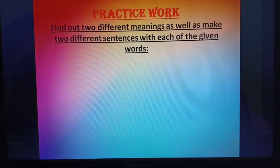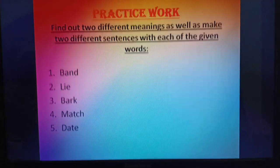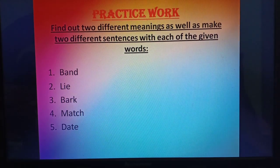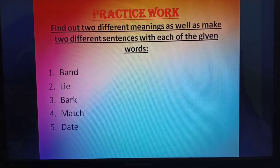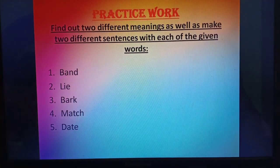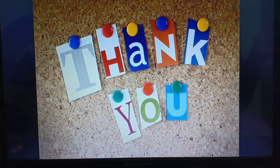Now we have some practice work — please note it down. Find out two different meanings and make two different sentences with each of the given words, just as I have done for numbers 1 to 10. You will do the same: number 1 — band, number 2 — lie, number 3 — bark, number 4 — match, and the last one — date. That's all for today's class. Hope you liked and enjoyed it. Thank you and have a nice day.